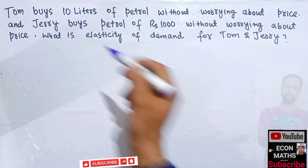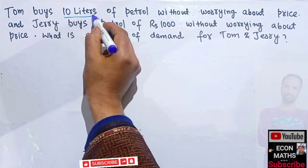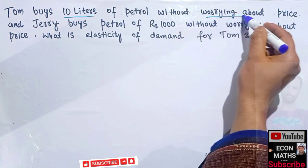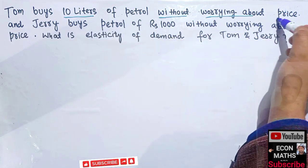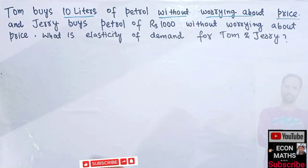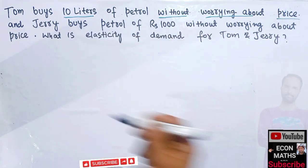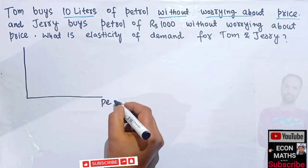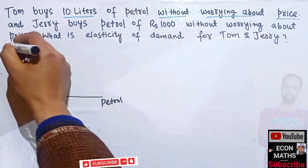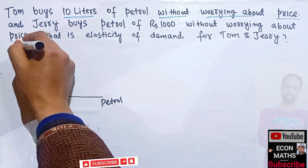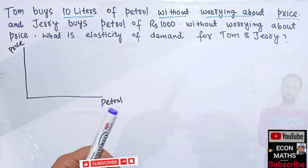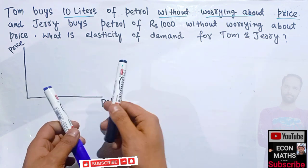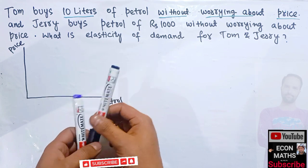Tom buys 10 liters of petrol without worrying about price. To understand what this means, let's draw a graph with quantity of petrol on one axis and price of petrol on the other. We are told that Tom demands 10 liters of petrol irrespective of the price.